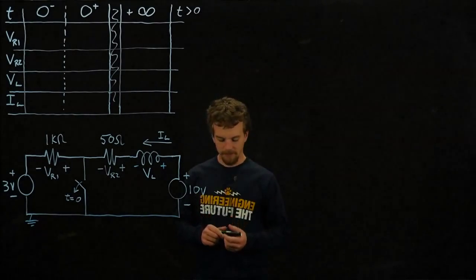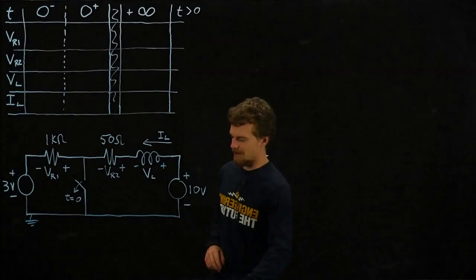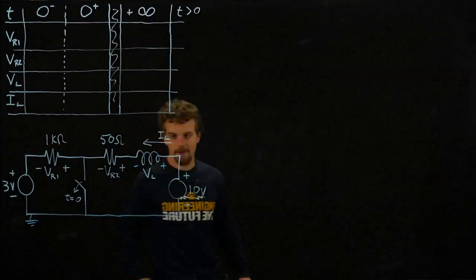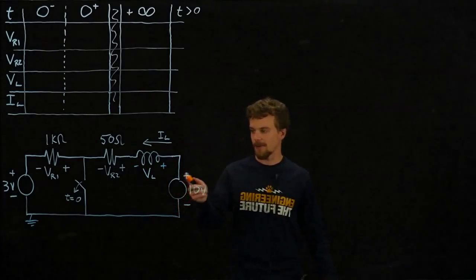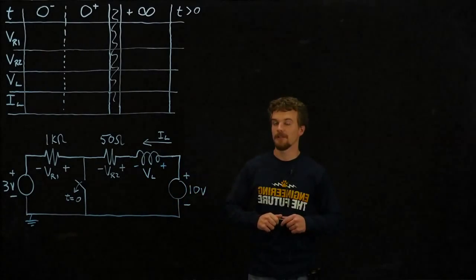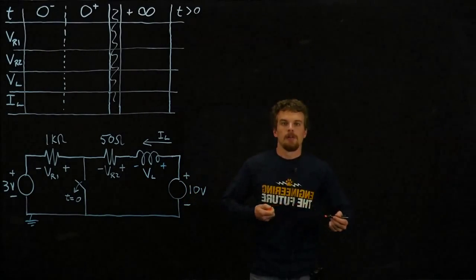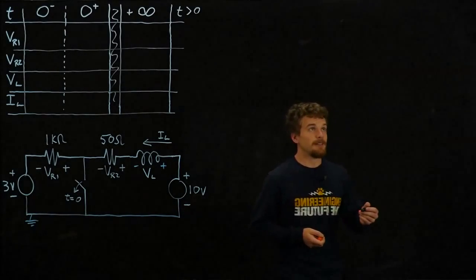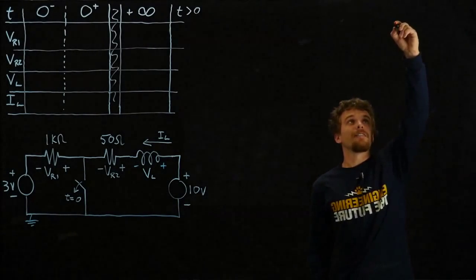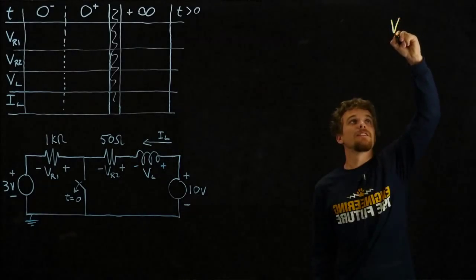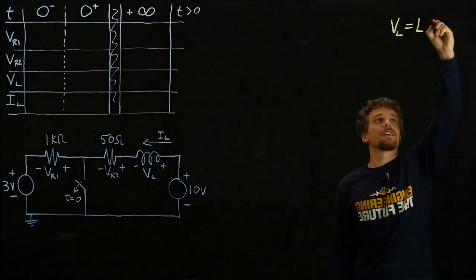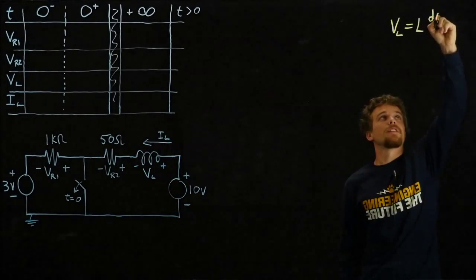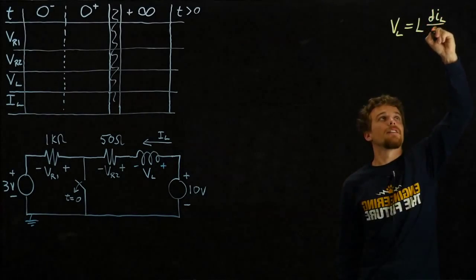The behavior of an inductor is going to dictate what goes on in this circuit right when the switch opens. For an inductor, we have an equation that says the voltage across an inductor is equal to the inductance times the time derivative of the current through the inductor.